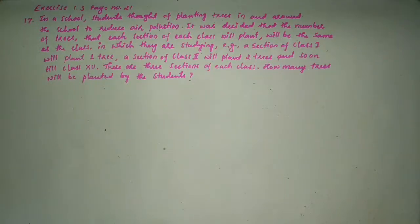In a school, students thought of planting trees in and around the school to reduce air pollution. It was decided that the number of trees that each section of each class will plant will be the same as the class in which they are studying. Example: a section of class one will plant one tree, a section of class two will plant two trees, and so on till class 12. There are three sections of each class. How many trees will be planted by the students?